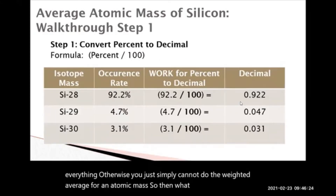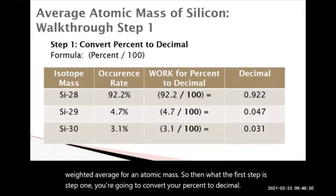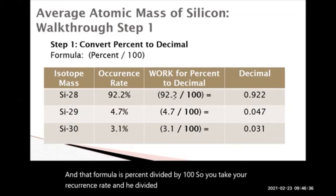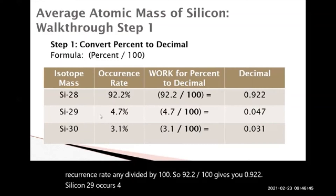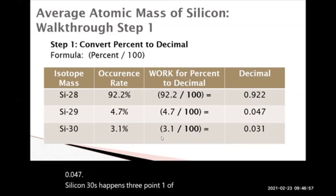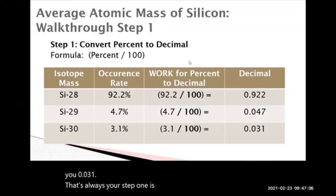Step one: convert your percent to decimal. The formula is percent divided by 100. So you take your occurrence rate and divide it by 100. 92.2 divided by 100 gives you 0.922. Silicon-29 occurs 4.7% of the time, so 4.7 divided by 100 gives you 0.047. Silicon-30 happens 3.1% of the time, so 3.1 divided by 100 gives you 0.031. That's always your step one — convert your percent to decimal.